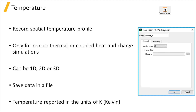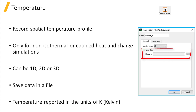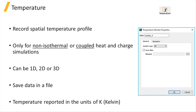The temperature monitor can record the spatial temperature profile within the monitor's space only when performing non-isothermal or coupled heat and charge simulations. The monitor geometry can be 1D or linear, 2D, or 3D, and the user can opt to save the results inside a separate file in addition to the simulation environment. The monitor's location and size can be adjusted under its geometry tab. The temperature results are returned in the units of kelvins.